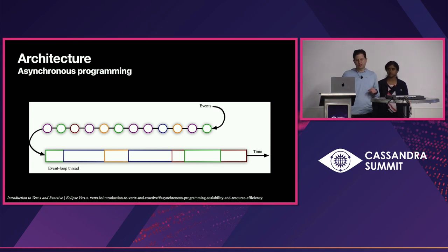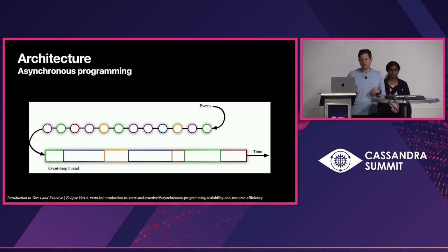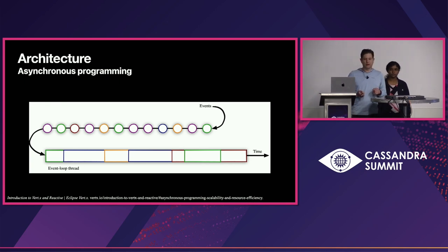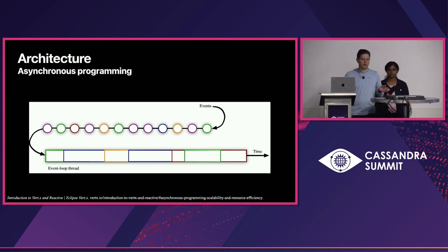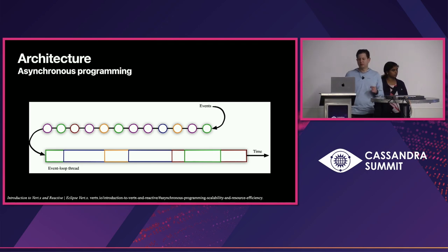Vert.x multiplexes concurrent workloads using the event loop, and that allows us to use the hardware more effectively. We can handle more requests, and that's what we need for a project like Cassandra because we are dealing with a massive amount of data.